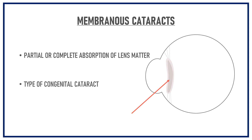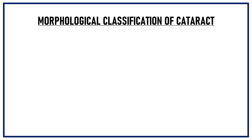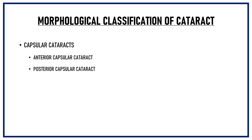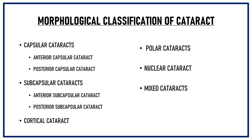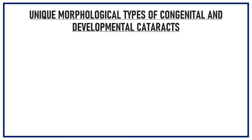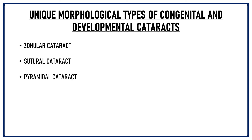Let's revise the morphological classification of cataract once again. Capsular cataracts: anterior capsular and posterior capsular. Subcapsular cataracts: anterior subcapsular and posterior subcapsular. Cortical cataract, polar cataract, nuclear cataract, mixed cataract, and total cataract. Unique morphological types of congenital and developmental cataracts are zonular cataract, sutural cataract, pyramidal cataract, blue dot cataract, and membranous cataract.